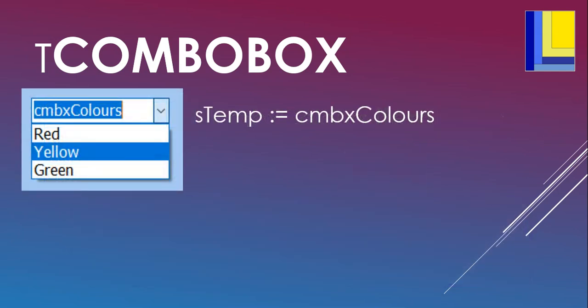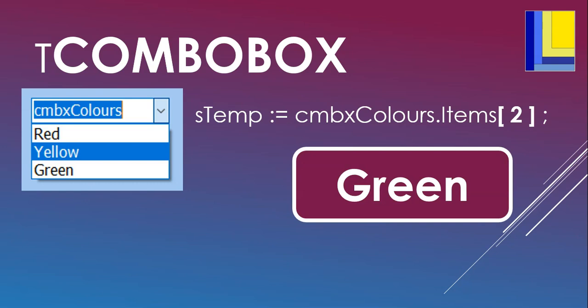To get the value of a specific item in the combo box, use the combo box name followed by .items and then a number in square brackets — that fetches the value at that position. So position 2 would be green, because red is 0, yellow is 1, and green is 2. That's how you retrieve a particular value from a combo box.